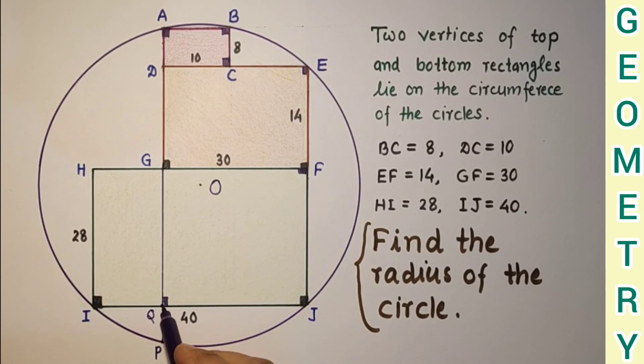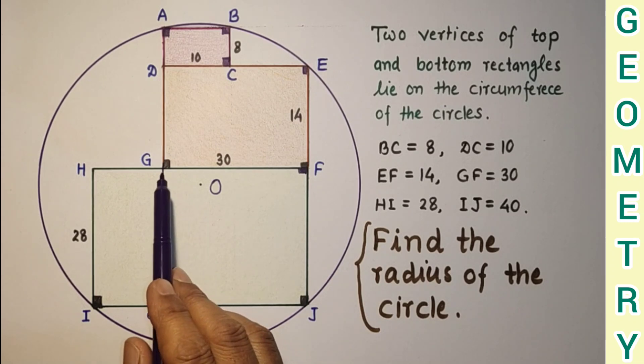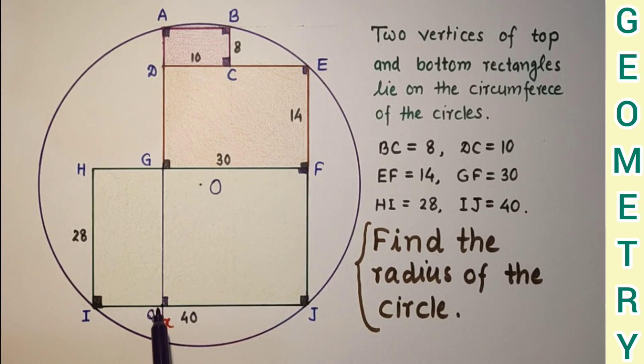Let us suppose this part QP is X. This part QP is X, and this GF is 30, so therefore this QJ will also be 30.